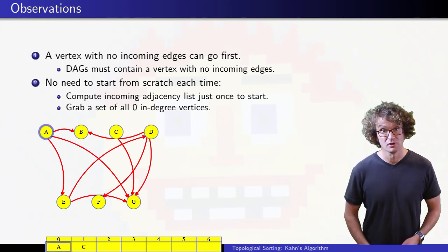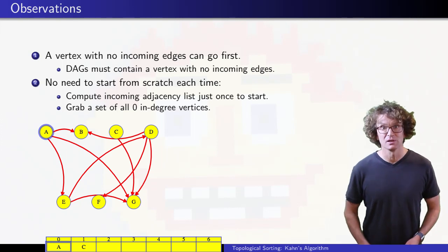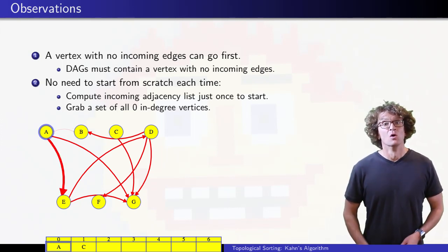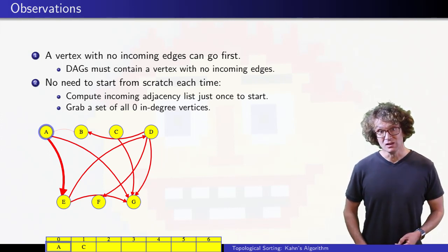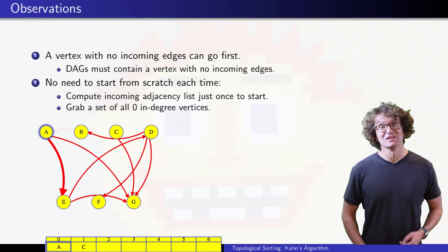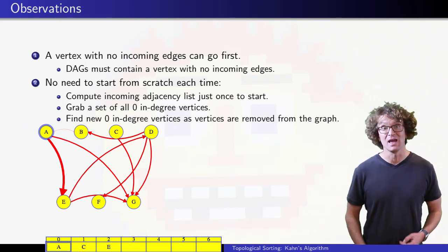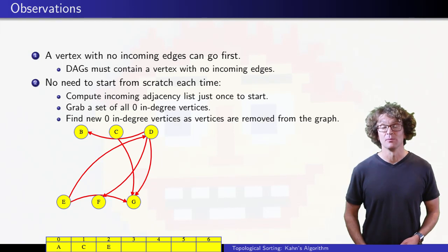Vertex A goes first, and we use its outgoing adjacency list to figure out which edges to delete from the incoming adjacency lists of B, then E. When we delete A's edge to vertex E, we see it is E's last incoming edge, so we can add E to the end of our growing ordered list. Finally, we delete A from G's list, and then we finish deleting A from the graph.